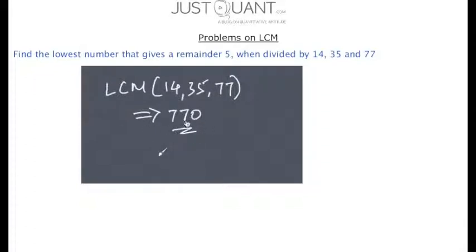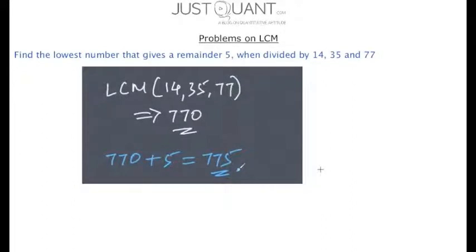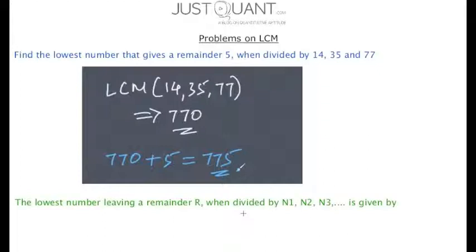That means 770 is the lowest number that gives remainder 0 when divided by 14, 35 and 77. Now 770 + 5 gives us 775, which is the lowest number that gives remainder 5 when divided by 14, 35 and 77. In general, the lowest number leaving remainder r when divided by n1, n2, n3 is given by LCM(n1, n2, n3) + r.